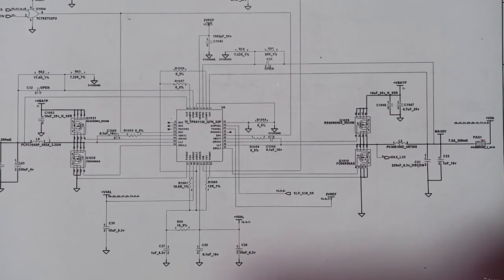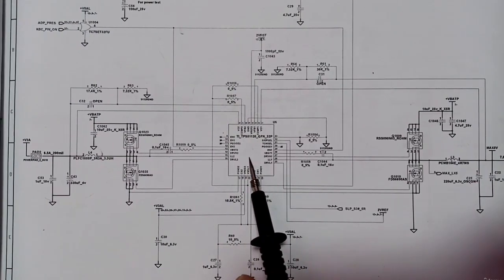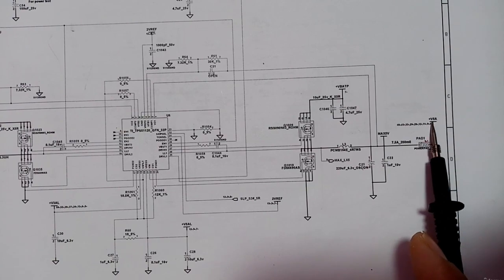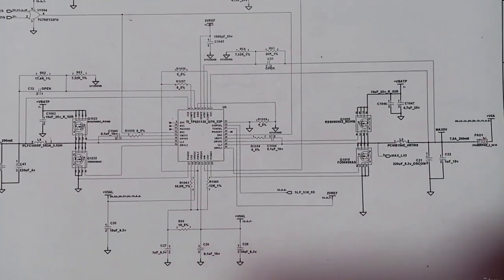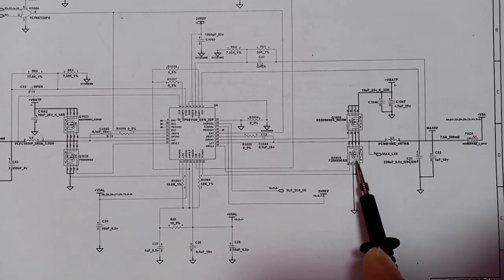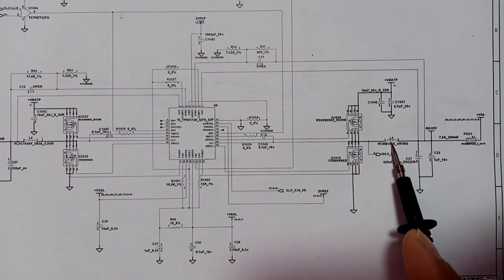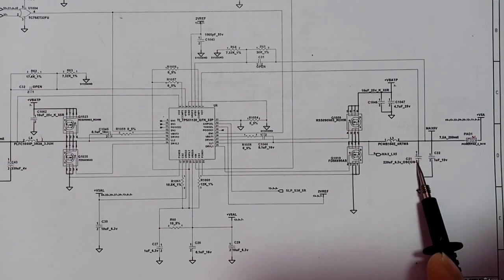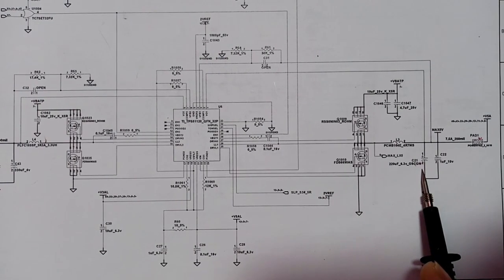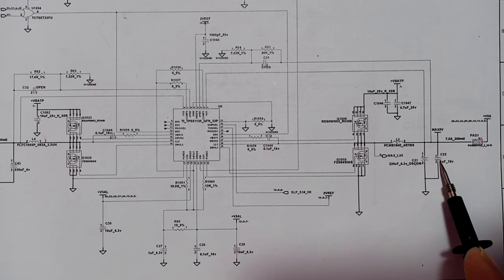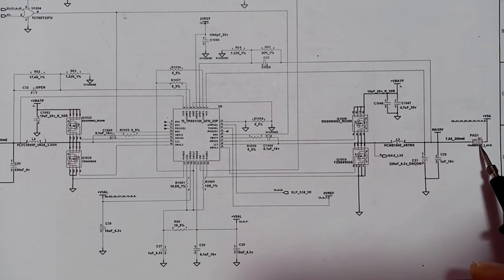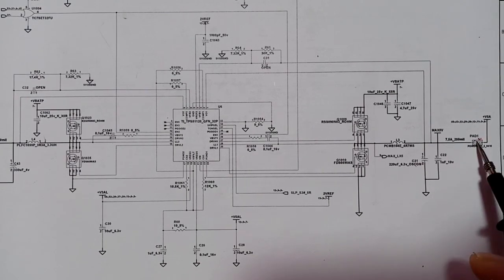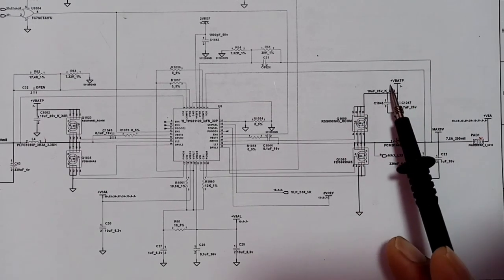This is the 3-volt/5-volt circuit where we have IC US6. Here we have the plus 5-volt channel, and over here we have the plus 3-volt channel. For every channel you will find two MOSFETs, an inductor to increase the current, one electrolytic capacitor to filter the current, and one ceramic capacitor to eliminate noise. Then we have the pad — the test point — where you can take measurements. At this point we will find 5 volts, and here we have the input: plus VBAT.